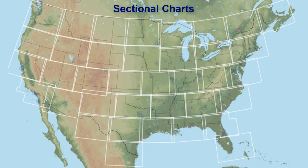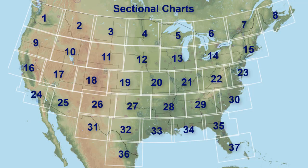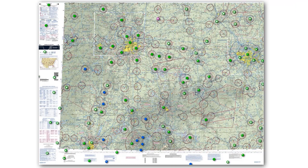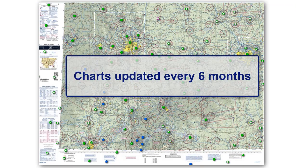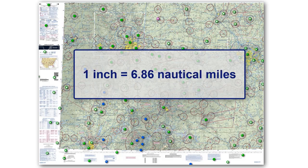Although paper charts are available to use for flight simming, we will be using SkyVector for these videos. Thirty-seven sectional charts cover the United States as we can see here. The paper charts are updated every six months and are on a scale of 1 to 500,000 — or think one inch on the chart to every 500,000 inches of actual Earth — so one inch on the chart is about 6.86 nautical miles.